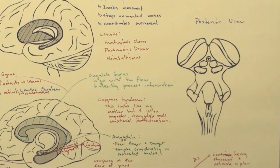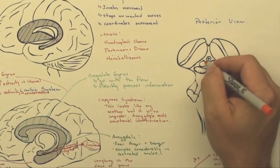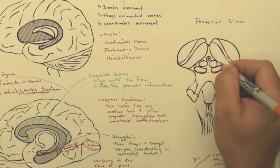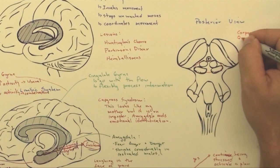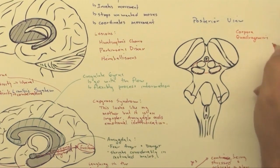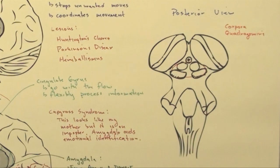I'm going to come over here to the posterior view, and I'm going to do this area completely together. It's called the corpora quadrigemina. But there's separate parts in here.